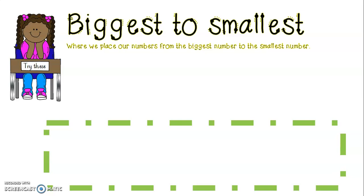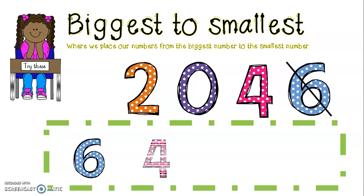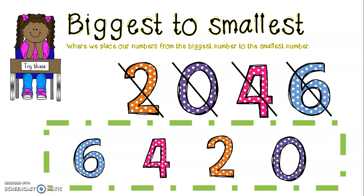Now you are going to try these on your own. We are going to place our numbers from the biggest to the smallest. Here are your numbers: 2, 0, 4, 6. Pause the video now and try and place them from the biggest number to the smallest number. The biggest number here is 6. The next biggest is 4. The next biggest is 2. And the last number would be 0. So the answer is 6, then 4, then 2, then 0. Well done.